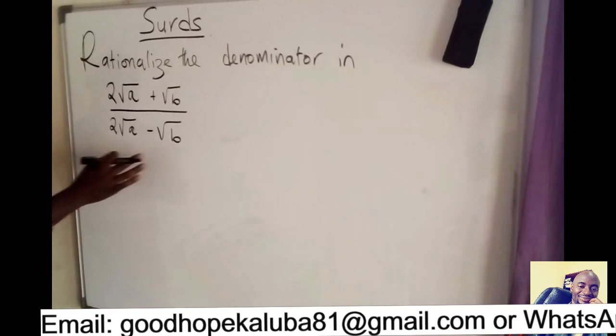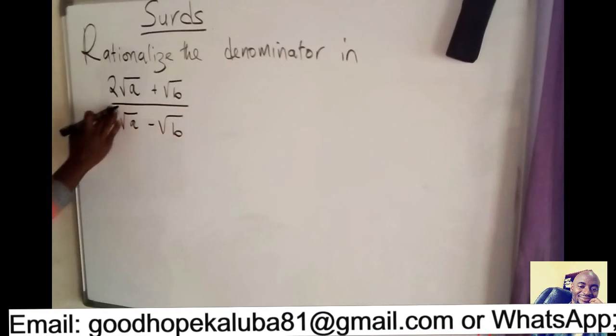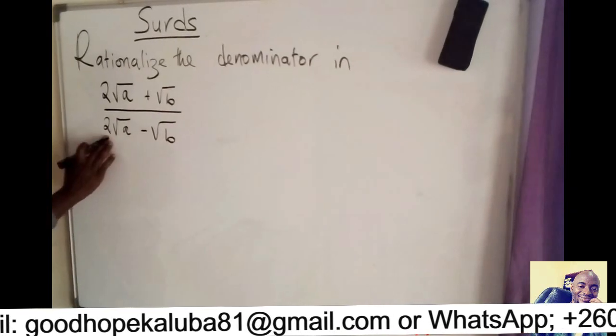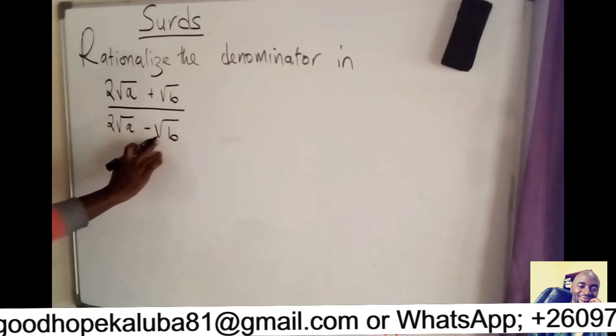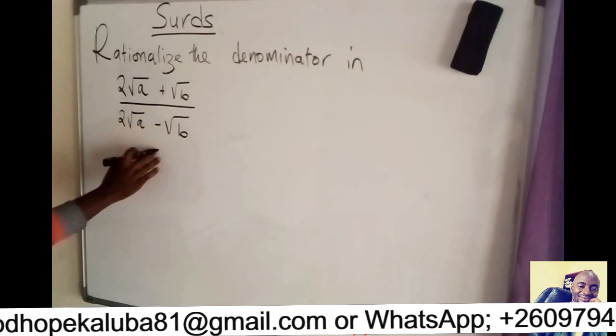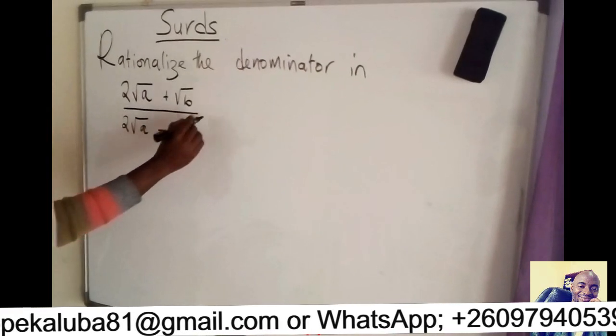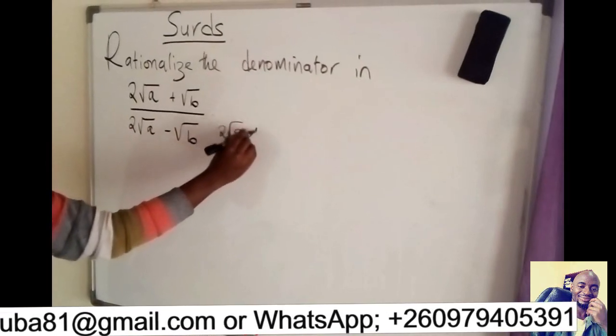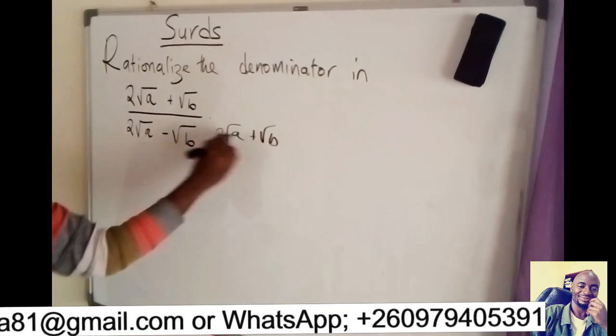Now this concept of rationalization involves multiplying the denominator with its conjugate. So we have 2 square root of A minus square root of B. The conjugate, we just put a positive here. So here it's going to be 2 square root A plus square root B.